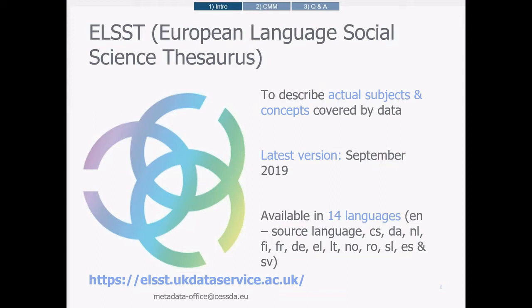The European Language Social Science Thesaurus, ELST, is a controlled vocabulary — but compared to a regular controlled vocabulary, a thesaurus is much more extensive and has a more complex structure. ELST is a broad-based multilingual thesaurus for the social sciences. ELST keywords are used to describe in detail the actual subjects and concepts covered by data. It is managed by a dedicated team within the Metadata Office in close cooperation with expert translators, and has an annual new version release including all languages.